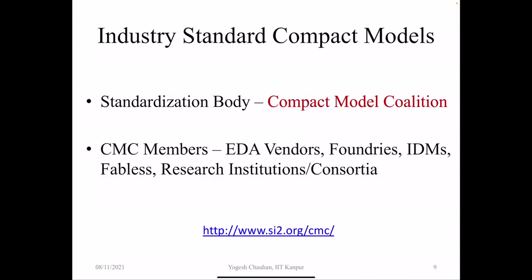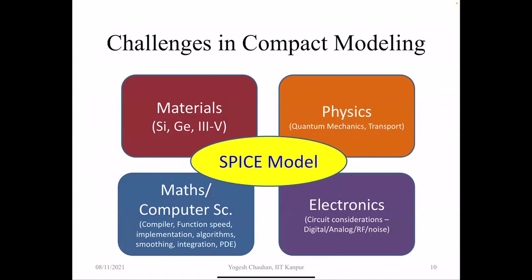A good model should be accurate — producing trustworthy simulations — and simple enough that parameter extraction is easier. This balance between accuracy and simplicity depends on the end application. It must guarantee excellent convergence, simulation time should be as small as possible, and accuracy requirements are high — something like 1% RMS error after fitting. Examples include BSIM bulk, CMG, and IMG. There is an industry standardization body called the Compact Model Coalition (CMC), whose members include EDA vendors, IDMs, foundries, and research institutions.